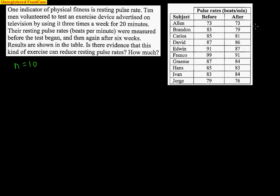So we actually need to go down the line here and try to figure out what everybody's difference was. For example, Al's difference after minus before is zero. He had no difference between his before and after. Brandon had a difference of negative four. Again, we're doing after minus before. Carlos had a difference of negative four as well.